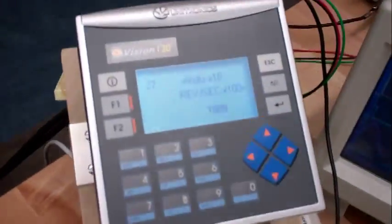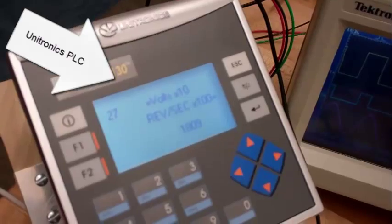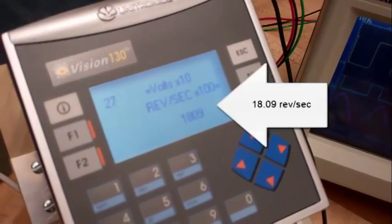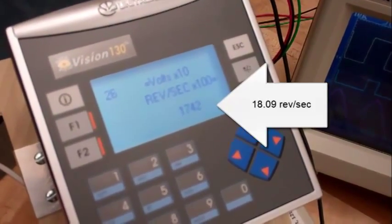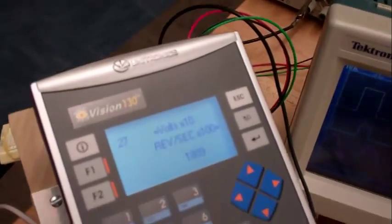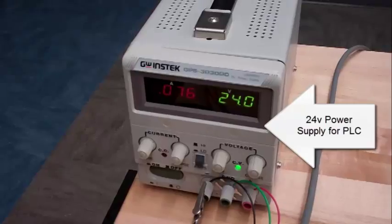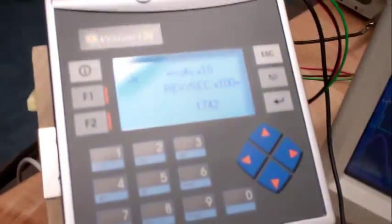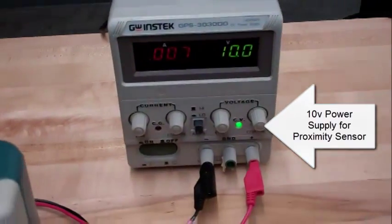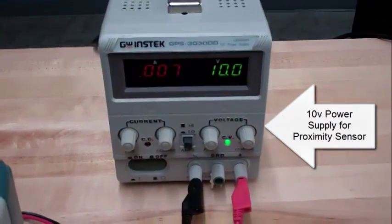This is the PLC measuring a rotation speed of 18.09 revolutions per second. That's the 24 volt power supply for the PLC. That's the 10 volt power supply for the proximity detector.